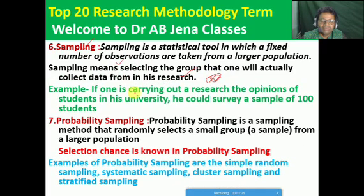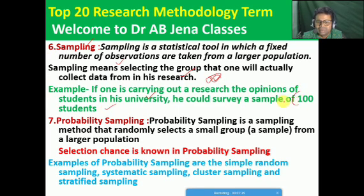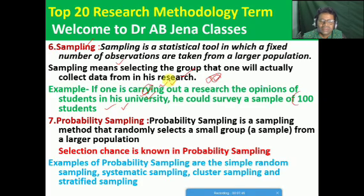For example, if one is carrying out research on the opinions of students of his university, he could survey a sample of 100 students. Here 100 students will be regarded as the sample, and total students of the university will be regarded as the population. I have also posted one video on what we mean by sampling and the different types of sampling.